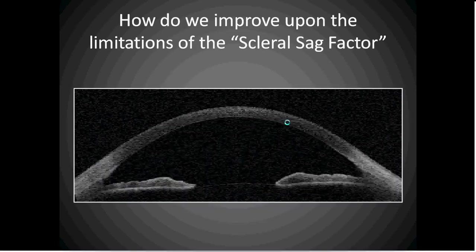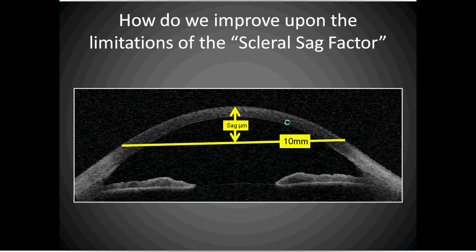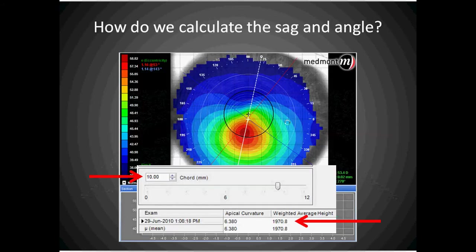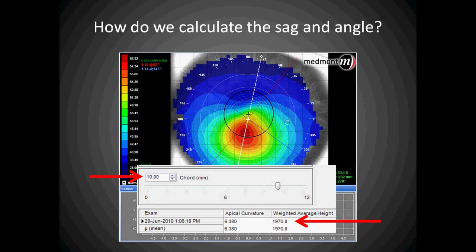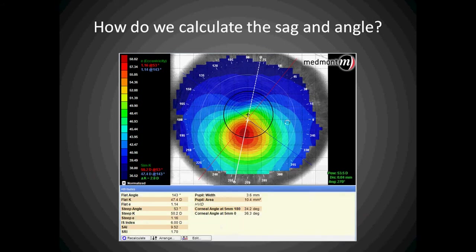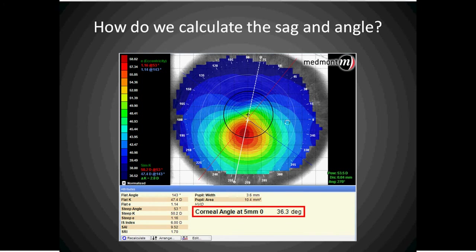To improve upon the error that may exist by using the scleral sag factor in some eyes, the Medmont topographer is able to calculate the corneal sagittal depth to a 10 millimeter cord, and also determine the angle that forms at that 10 millimeter cord 360 degrees around. Therefore the Medmont can measure the corneal sagittal depth — in this case 1,970 microns — and measure the angles that form 360 degrees around the eye surface.